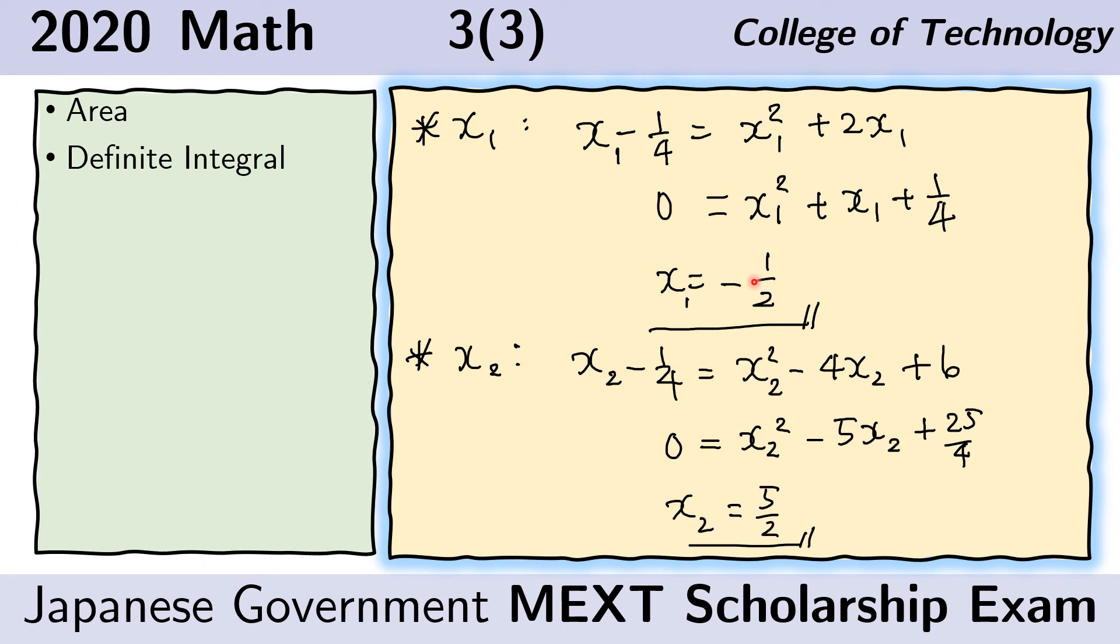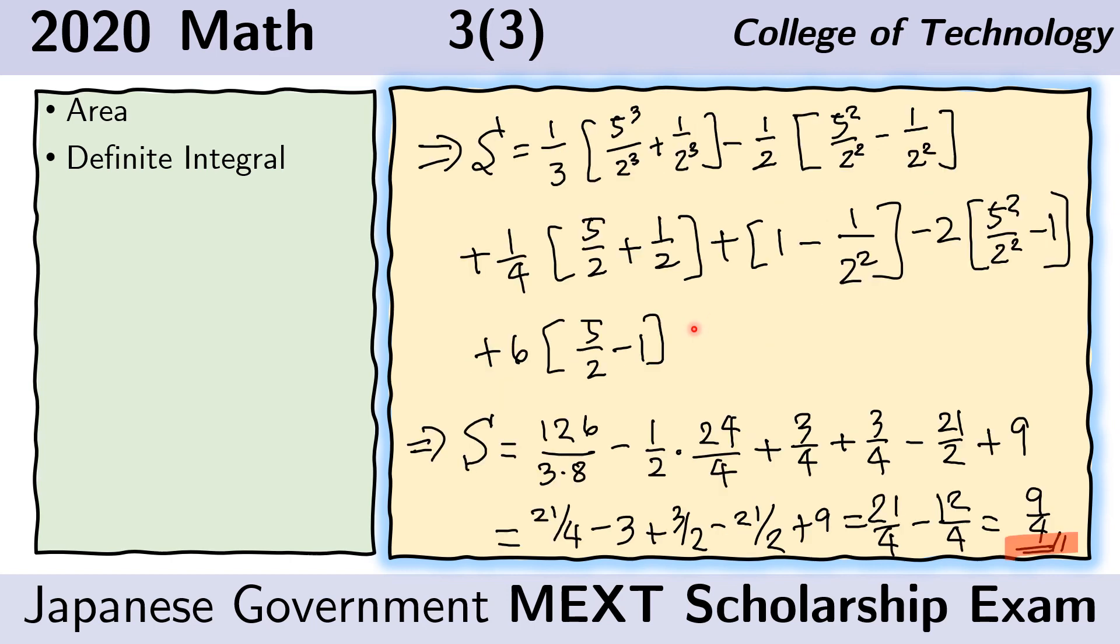And so x1 is this. x2 is this. We are now ready to plug this in our integral. Here, we just plug in the values that we obtained for x1 and x2. And here, we show the arithmetic for that. And eventually, we will obtain this value for s. That is the area in the bounded region.